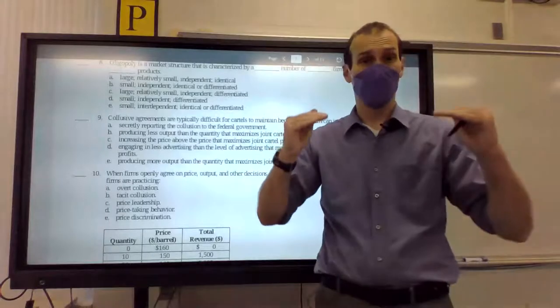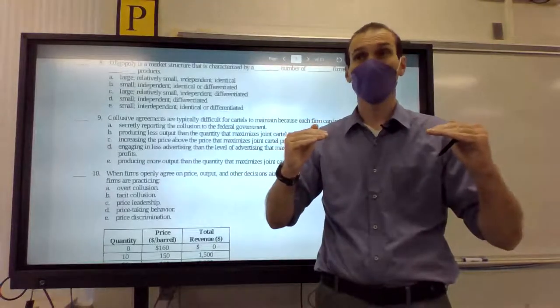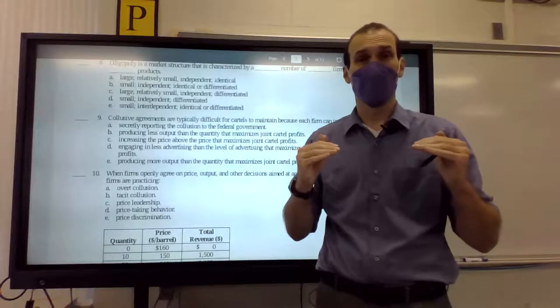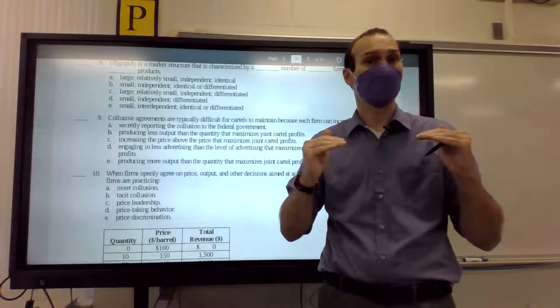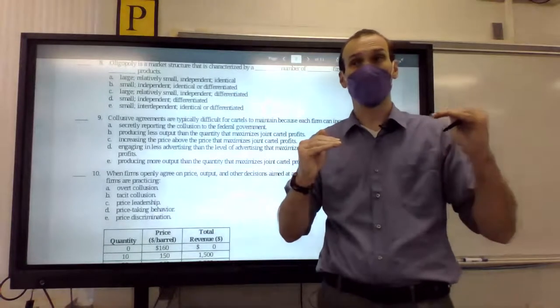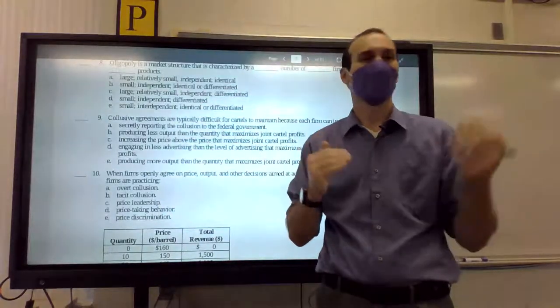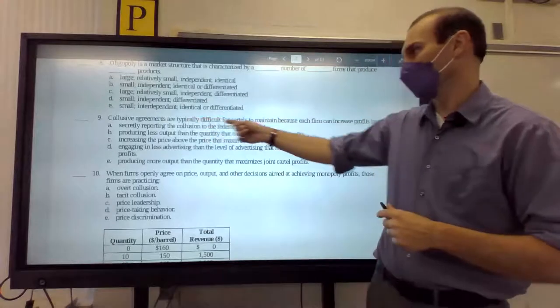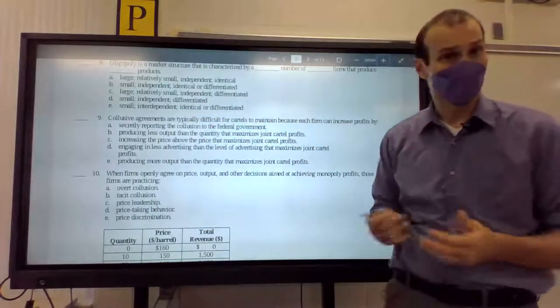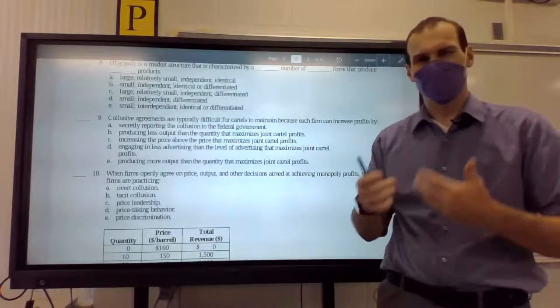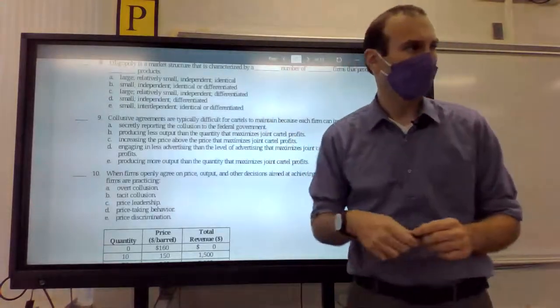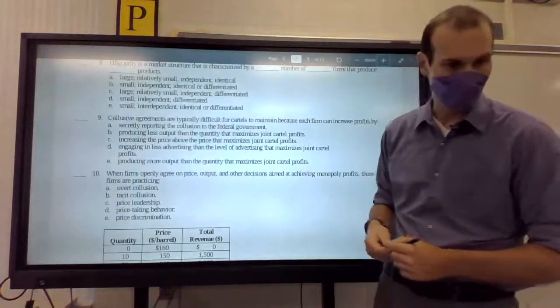If we both agree to cut our production so that prices go up, well, great, our profits will go up. But it does mean that with these higher prices, I'd like to produce more at the higher price. So I'd want to cheat. Hence, why are these difficult for cartels to maintain? Because there's this example of people wanting to cheat. A very specific question, not kind of a very good concept-based question as well.